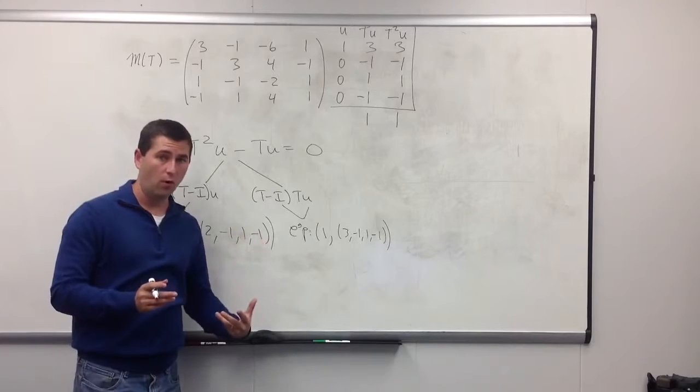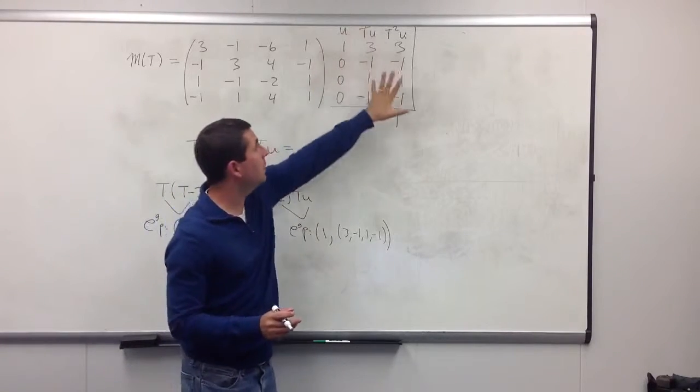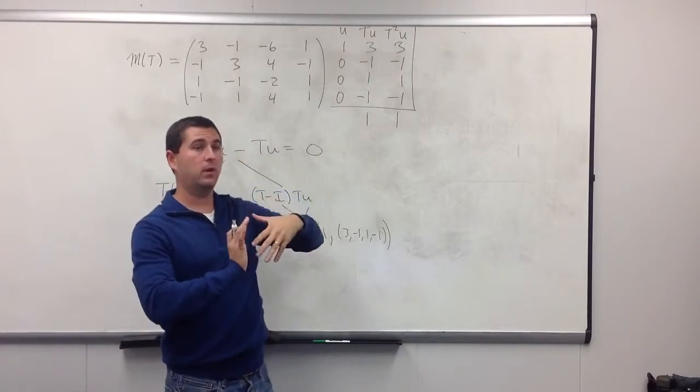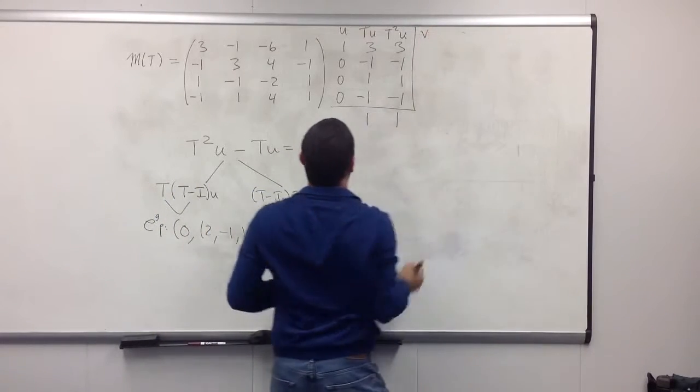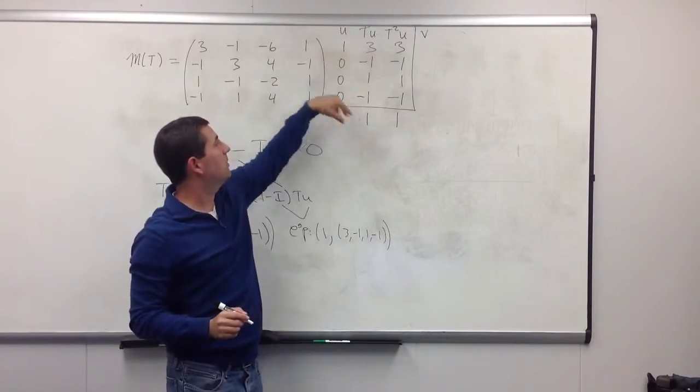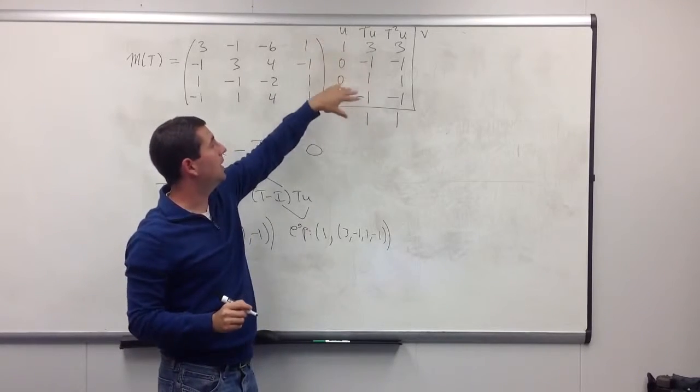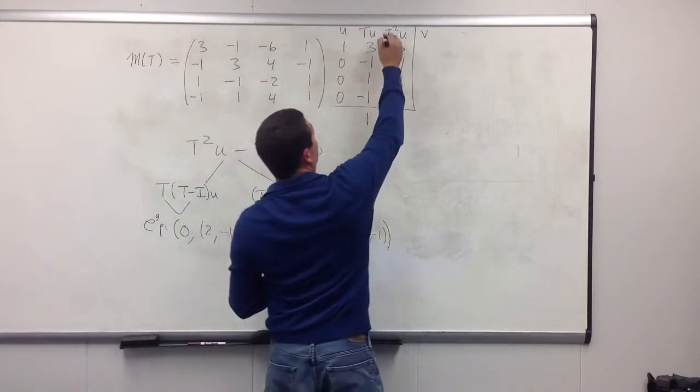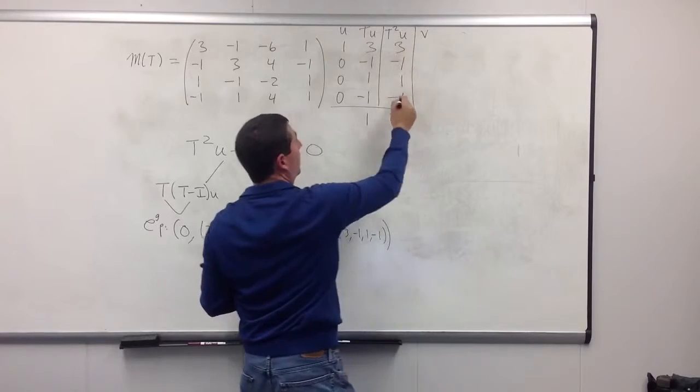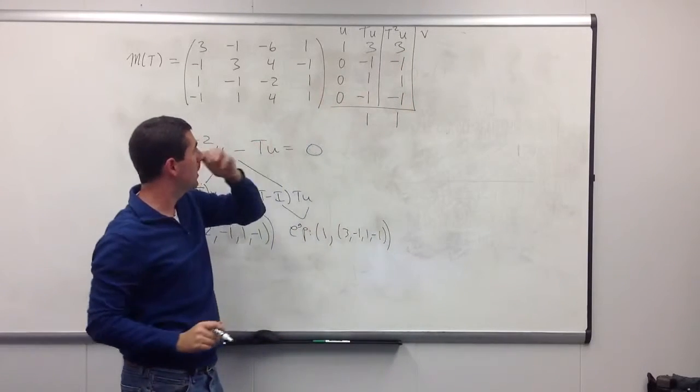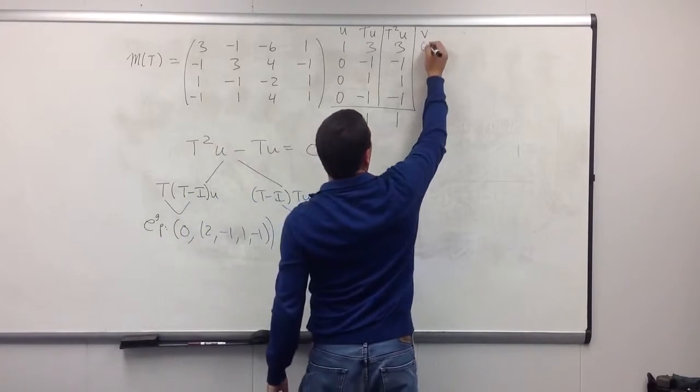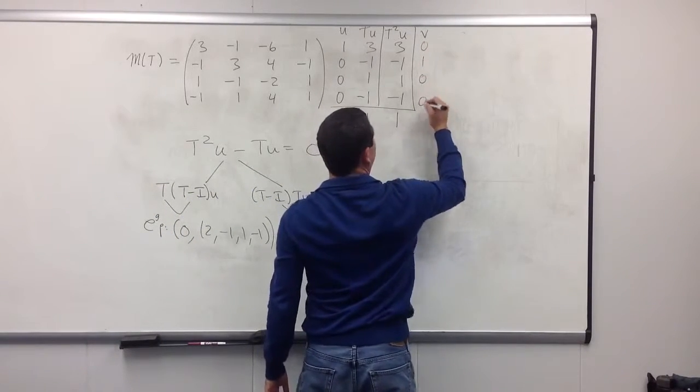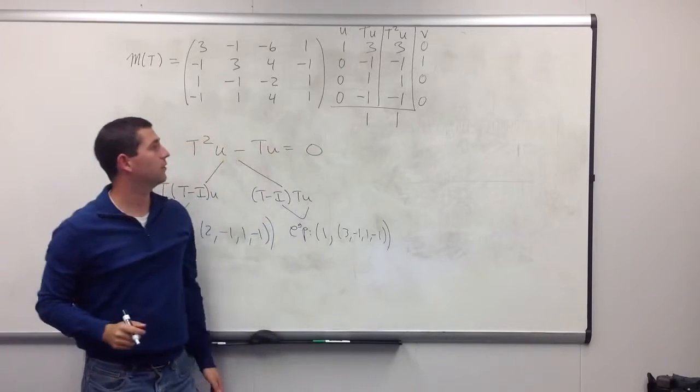Okay, so we start the process over. Well, we don't forget what we've done. But I'm just going to start with a new non-zero vector. Let me call it v. I want to take something which is going to be linearly independent with what we have. Well, I don't worry about T squared u. This one, we already knew that was dependent on these two. So, I just want something which isn't a linear combination of u and Tu.